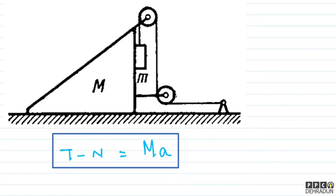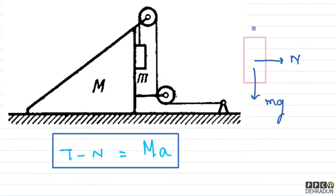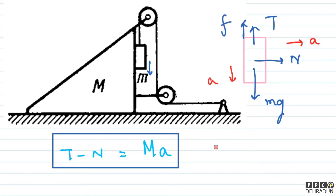Ab bachon, ab hum log small m ka free body diagram banate hain. Isme forward aur downward dono directions mein net forces dekhne honge, kyunki dono directions mein acceleration hai. Ek to normal reaction hai jo towards the right lag raha hai because of the wedge. Saath hi saath neeche ki taraf small mg lag raha hai. Upar ki taraf tension lag raha hai, aur kyunki block ka acceleration neeche ki taraf hai with respect to wedge, to wedge ki surface se kinetic friction upward direction mein lagega. Equations: mg minus tension minus friction equals m into a, aur normal equals small m into a.